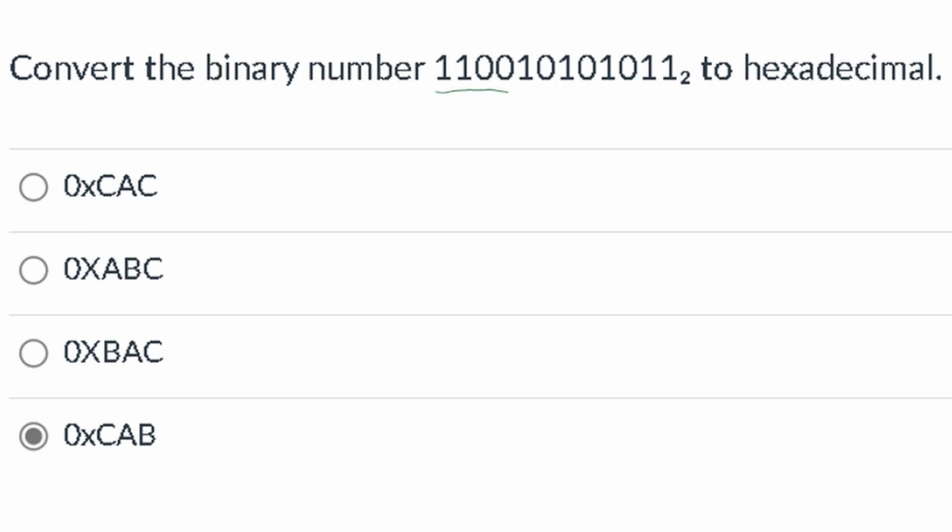So we can see we have a set of 4 bits here, 4 bits here, and 4 bits here. Now with hexadecimal, remember hexadecimal means we have base 16.